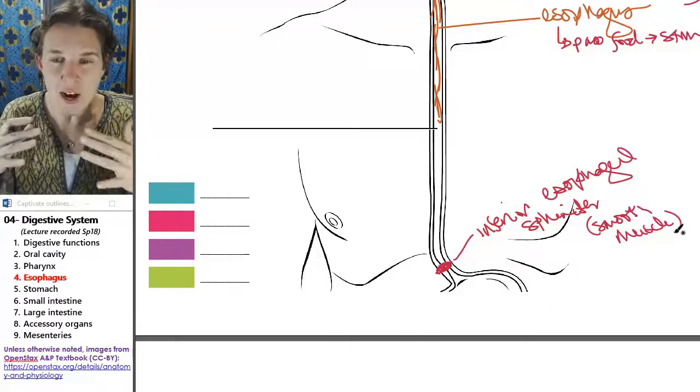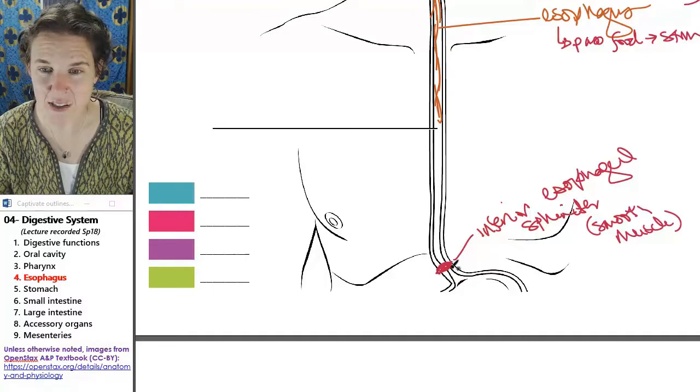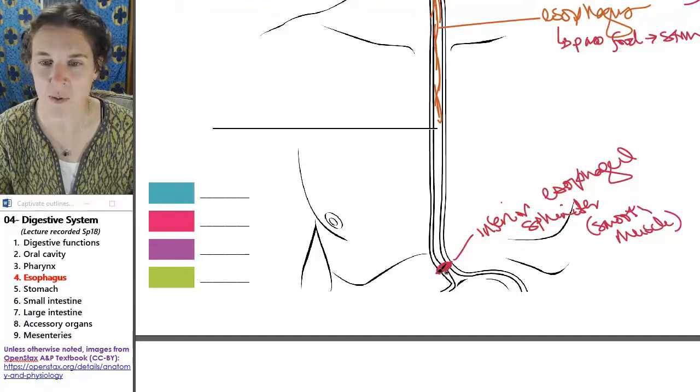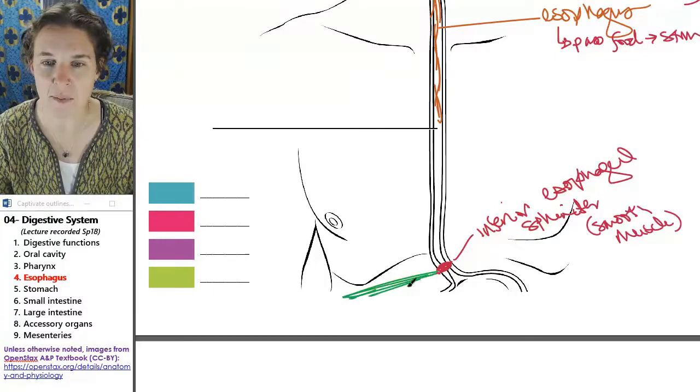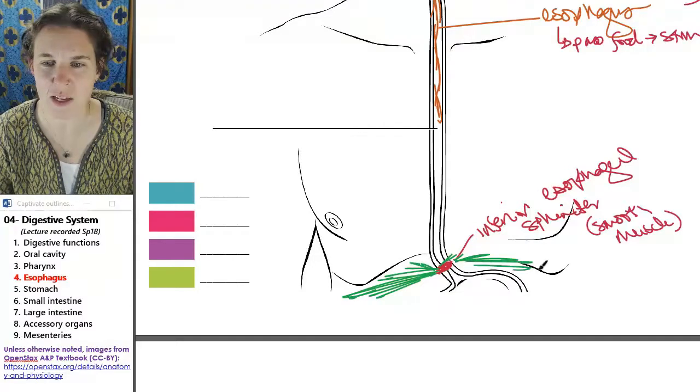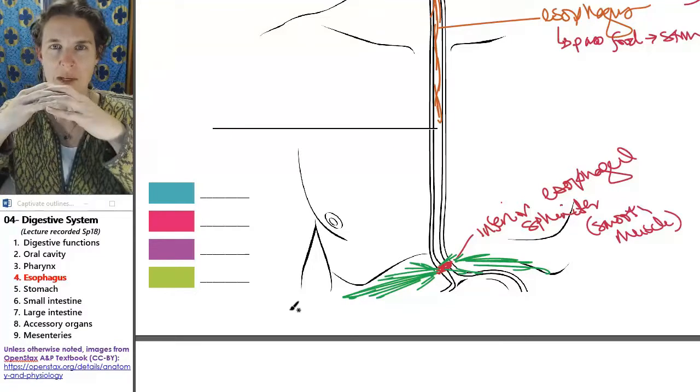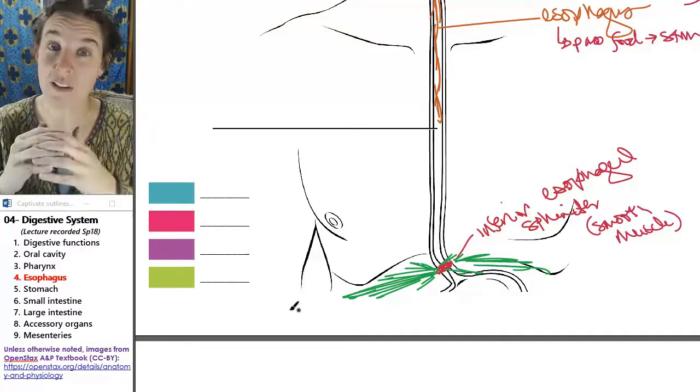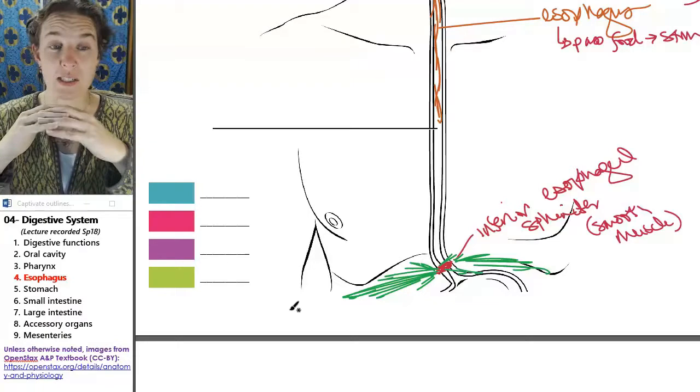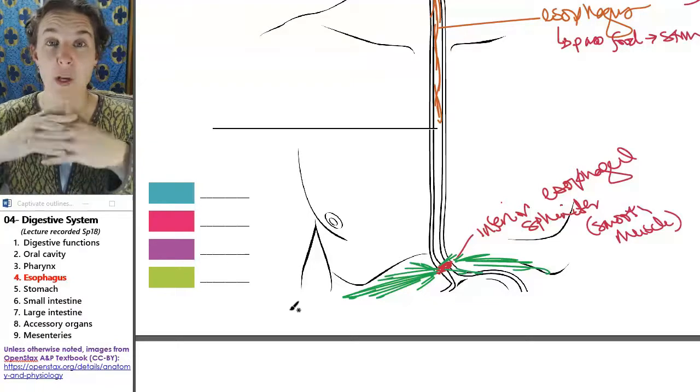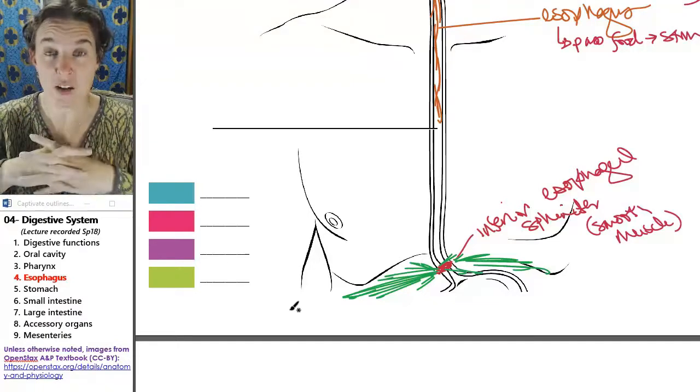So somehow it has to get from mediastinum into abdominal cavity and it does that by passing through the diaphragm. The diaphragm is a skeletal muscle. So if I were to make the diaphragm this, it's kind of a funny shaped muscle. It's kind of a rounded muscle. And we'll talk about the diaphragm more with the respiratory system because it's the muscle that when it contracts, it generates breath.